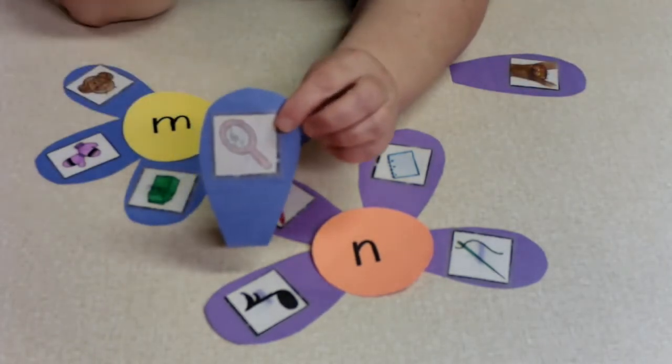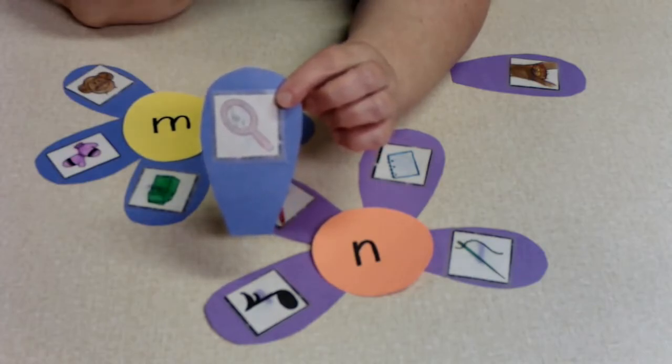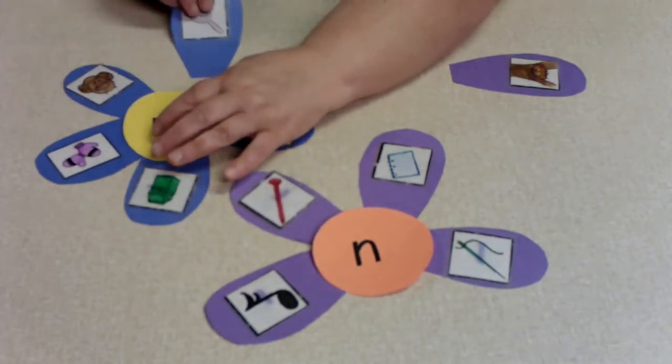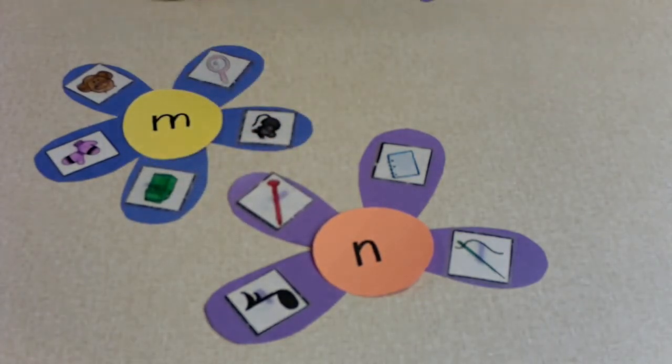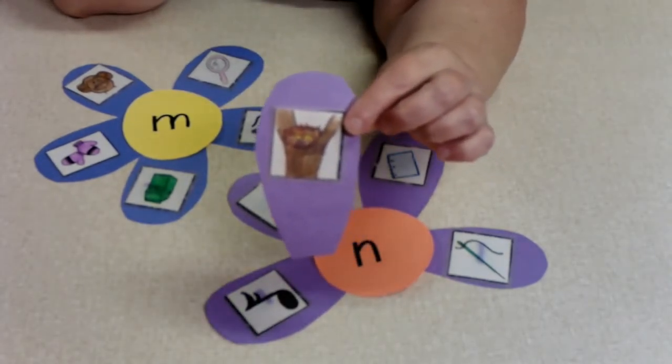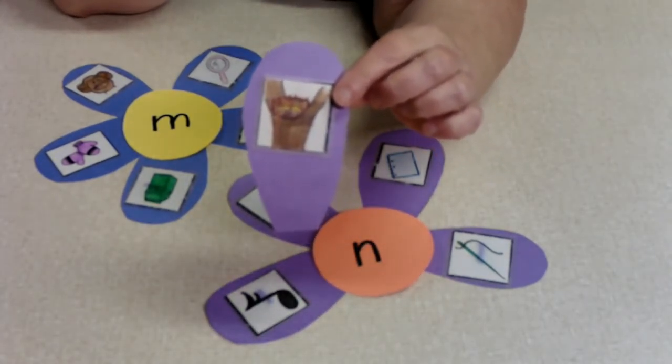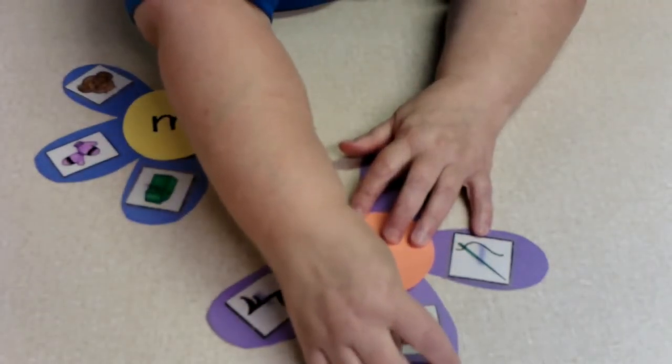Here we have a mirror. Mirror begins with the N sound. And here is a nest. Nest begins with the N sound.